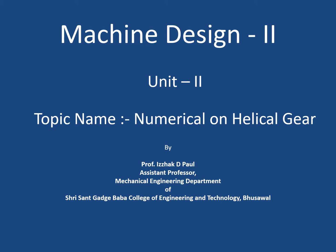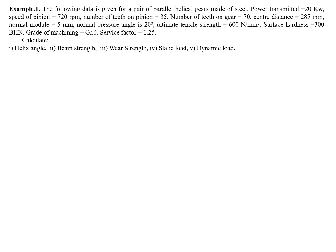Next topic is numerical on helical gear, part of the helical gear. This is the numerical which is given. We have the given data: power is given to us, speed is given to us, Zp and Zg (number of teeth on pinion and gear) are given, center distance a is given, normal module mn is given, alpha is given, Sut is given, BHN is there, and service factor is there.